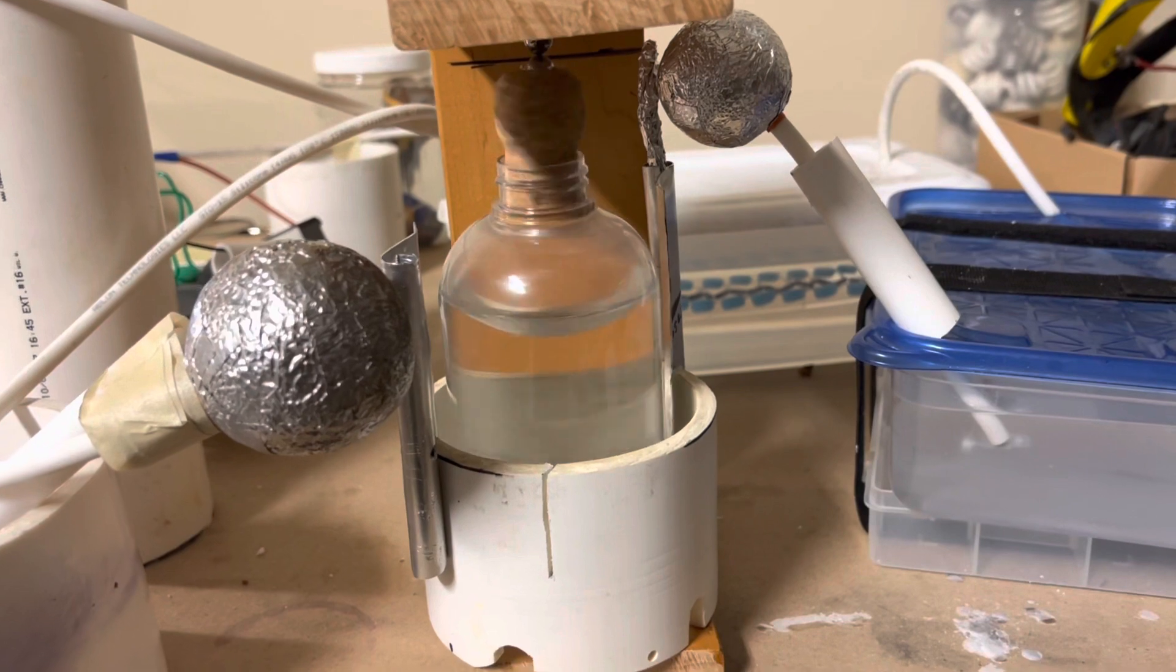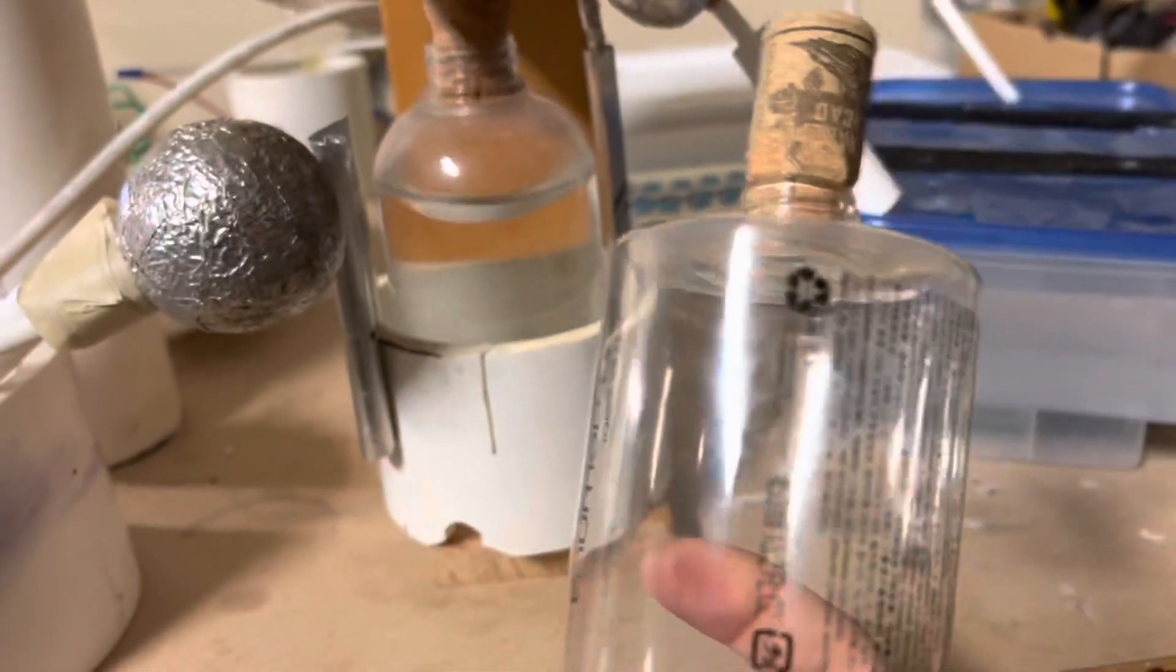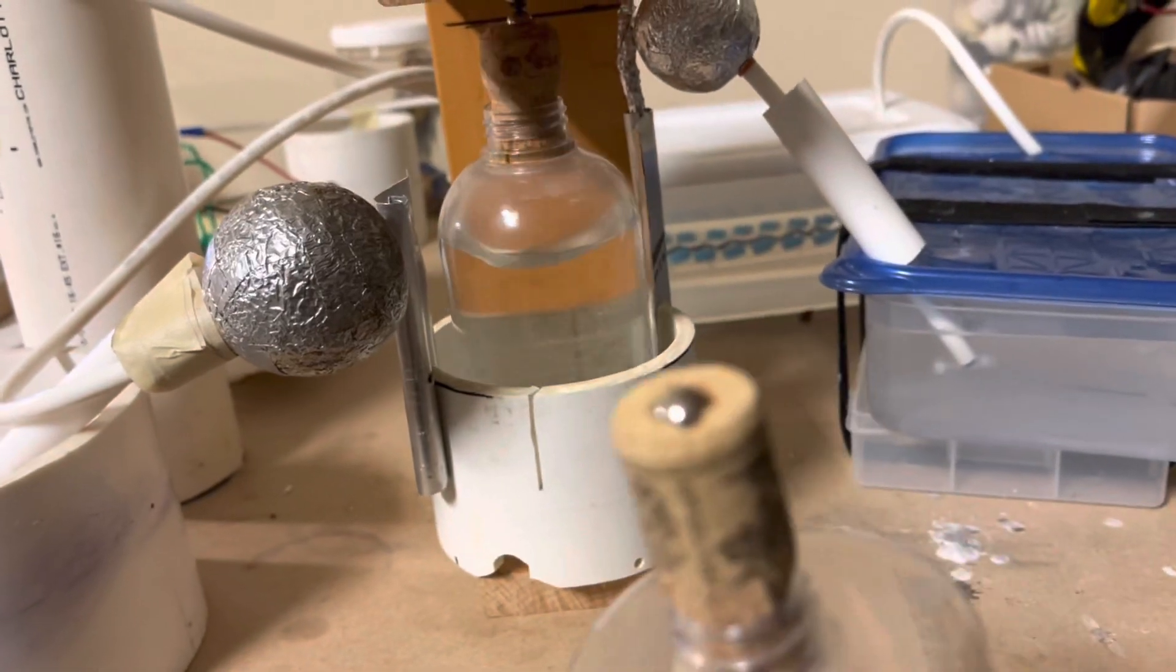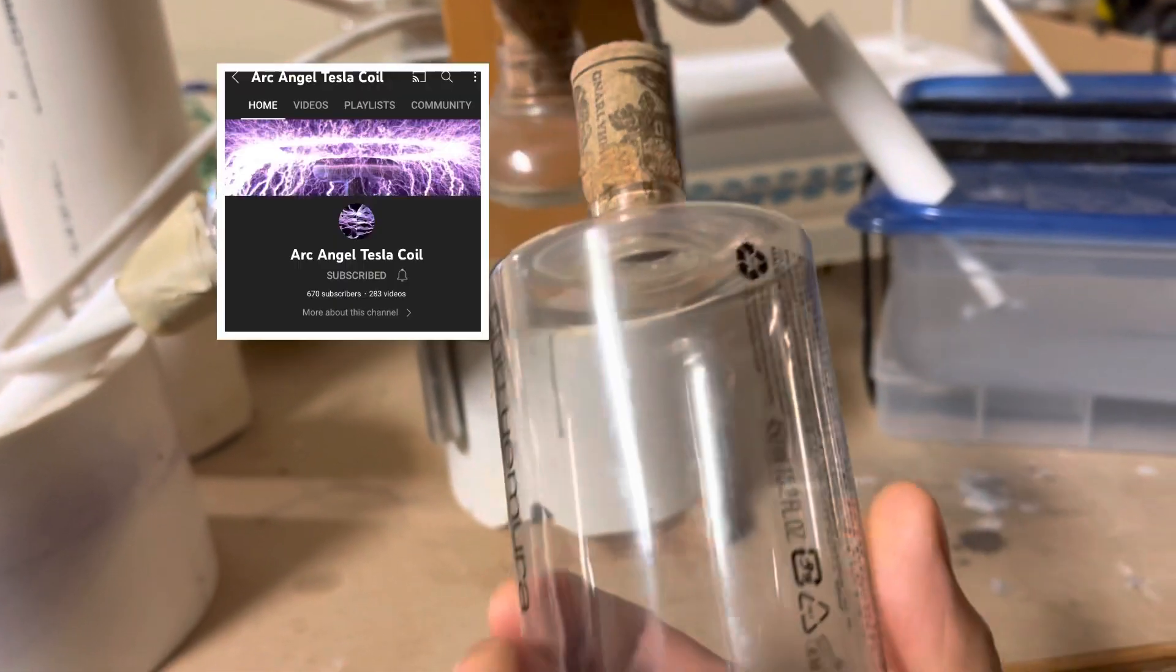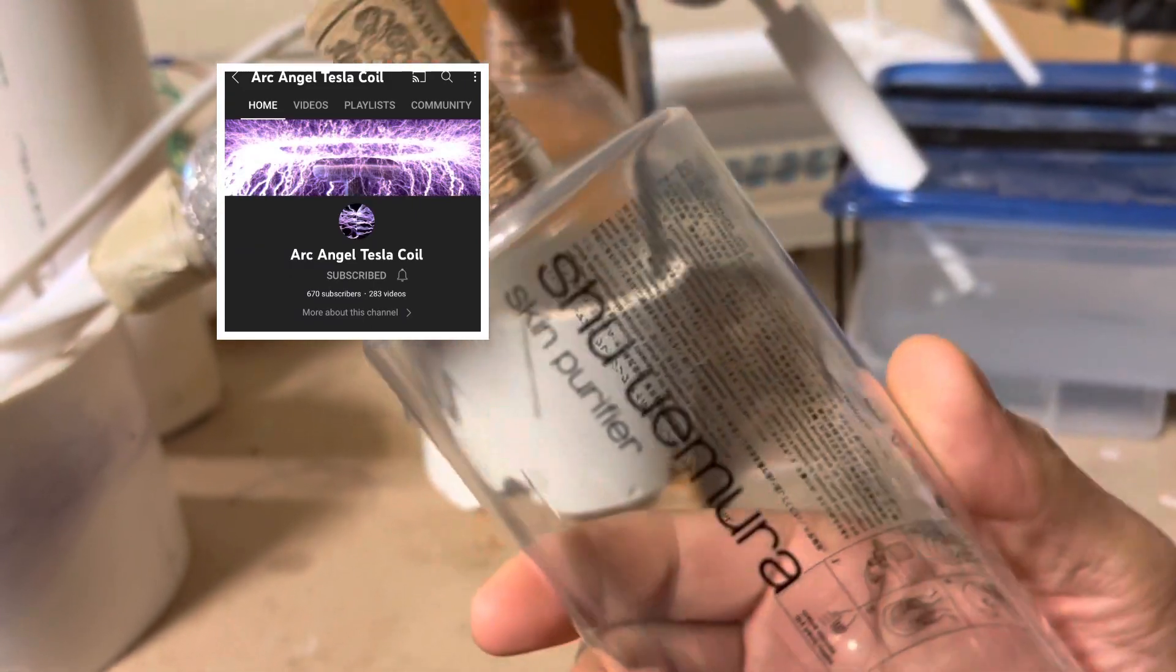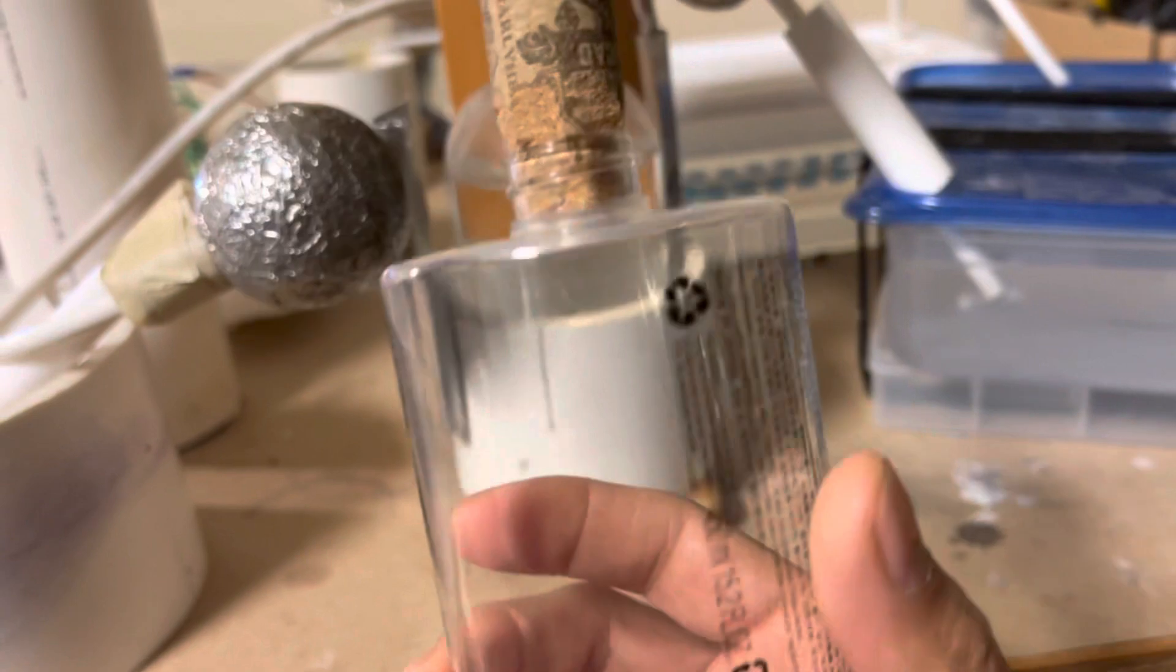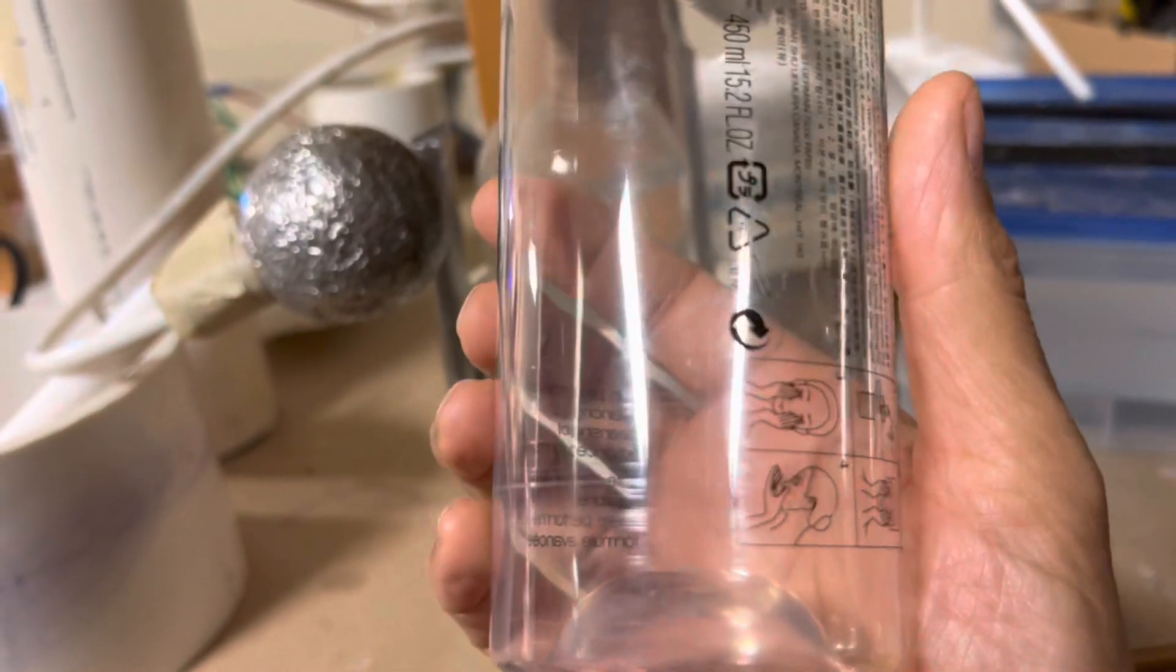Now I'm going to repeat it. I have a similar setup without the water and it was actually suggested to me by Archangel to try this. Archangel from Archangel Tesla Coil to see if it will work with an empty plastic bottle. And I just happened to have this one lying around and figured I'll stick a cork in it, put a little ball bearing in it and see if it would do the same thing.